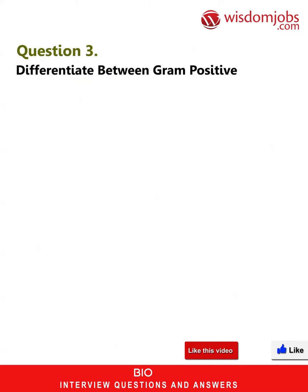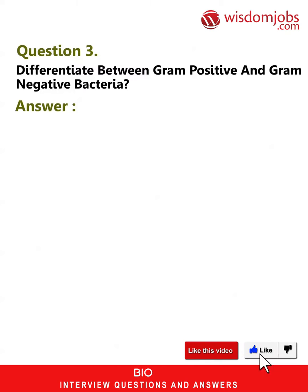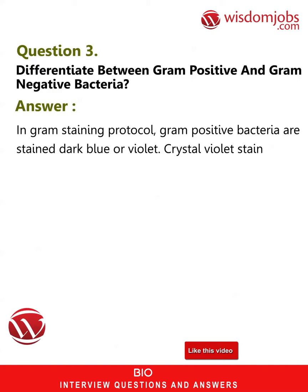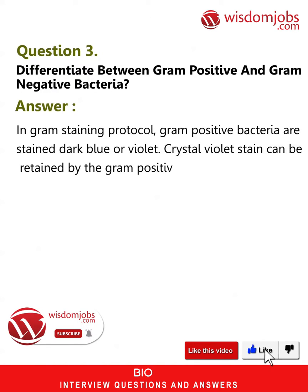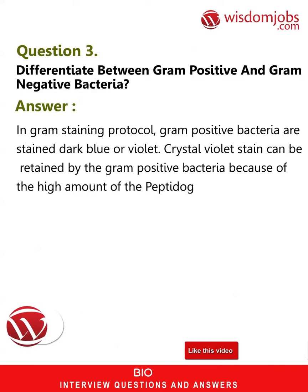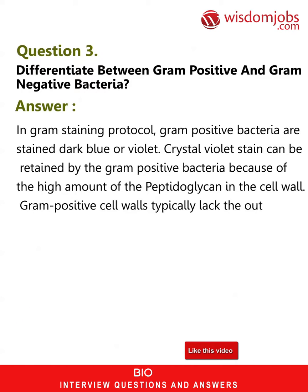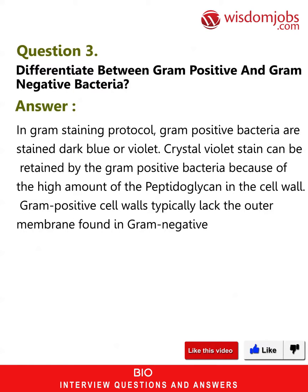Question 3: Differentiate between gram-positive and gram-negative bacteria. Answer: In gram staining protocol, gram-positive bacteria are stained dark blue or violet. Crystal violet stain can be retained by gram-positive bacteria because of the high amount of peptidoglycan in the cell wall. Gram-positive cell walls typically lack the outer membrane found in gram-negative bacteria.